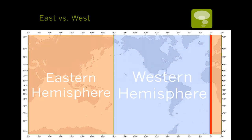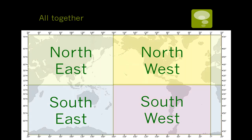Here's eastern and western. Please pay attention that the eastern hemisphere wraps around and includes this small area here on the map. When all four are put together, you get the four quadrants of the Earth: northeast, northwest, southeast, southwest.